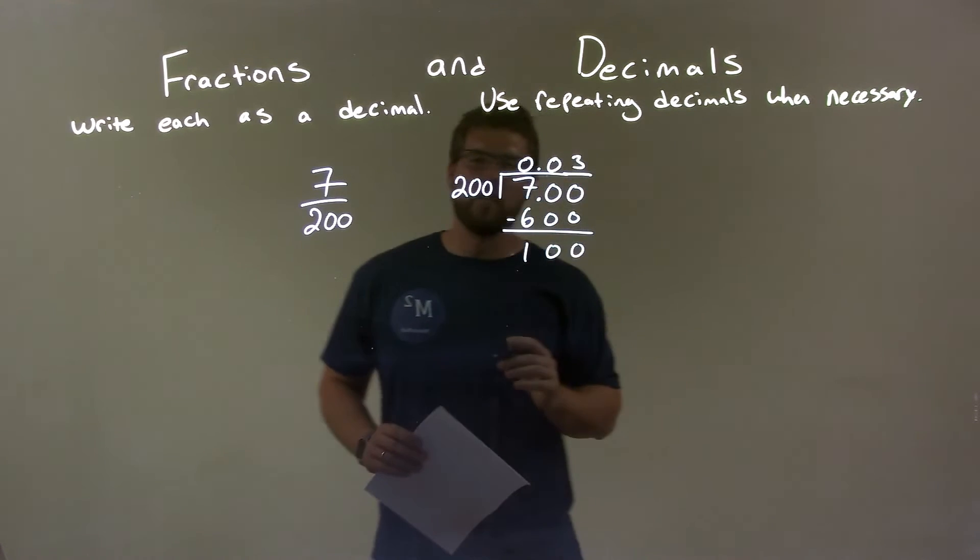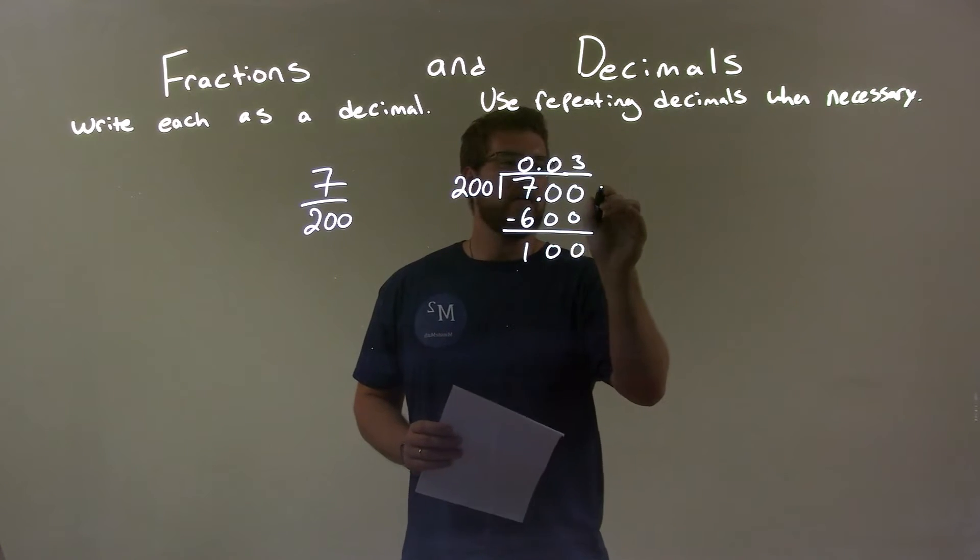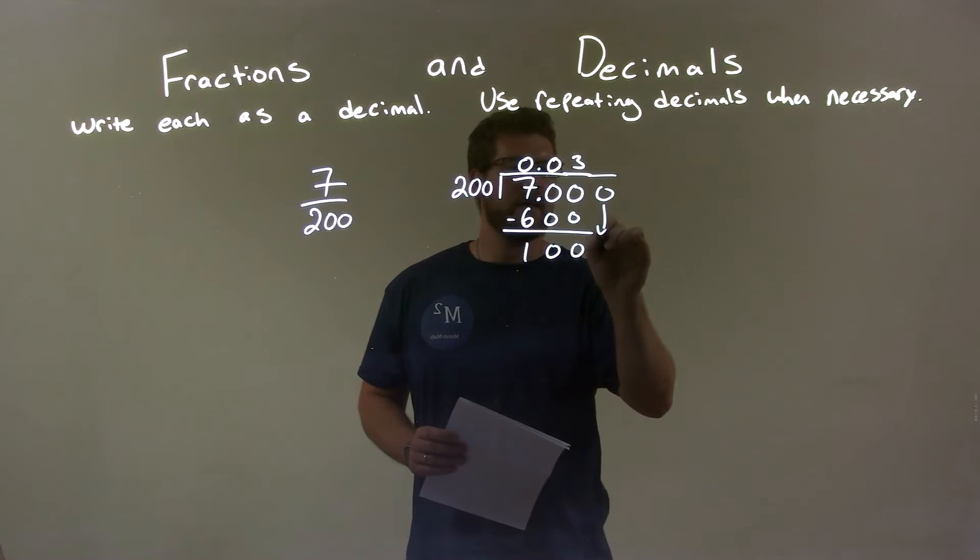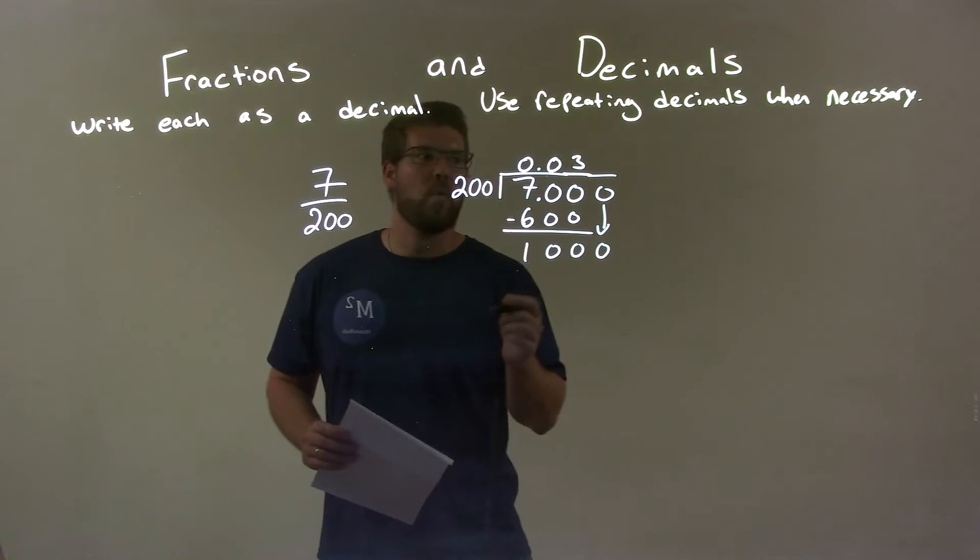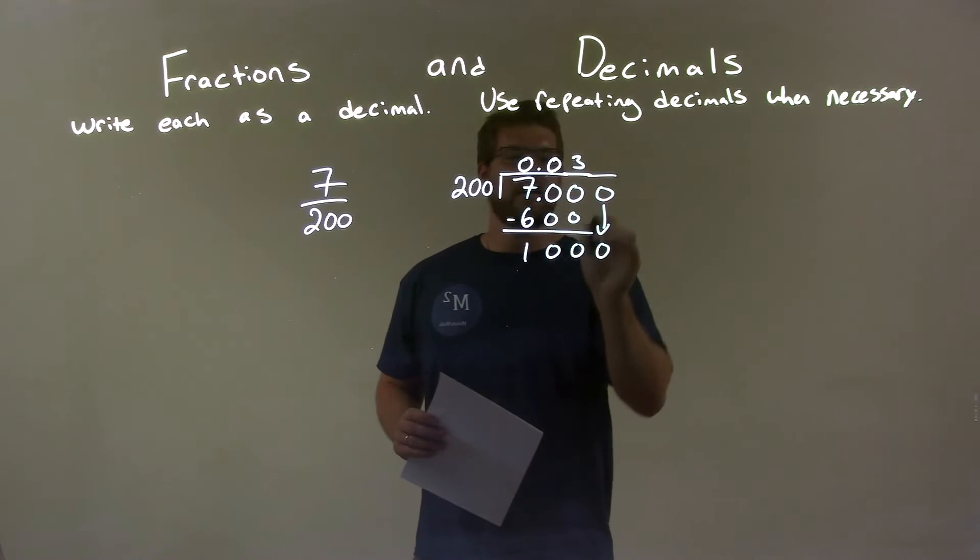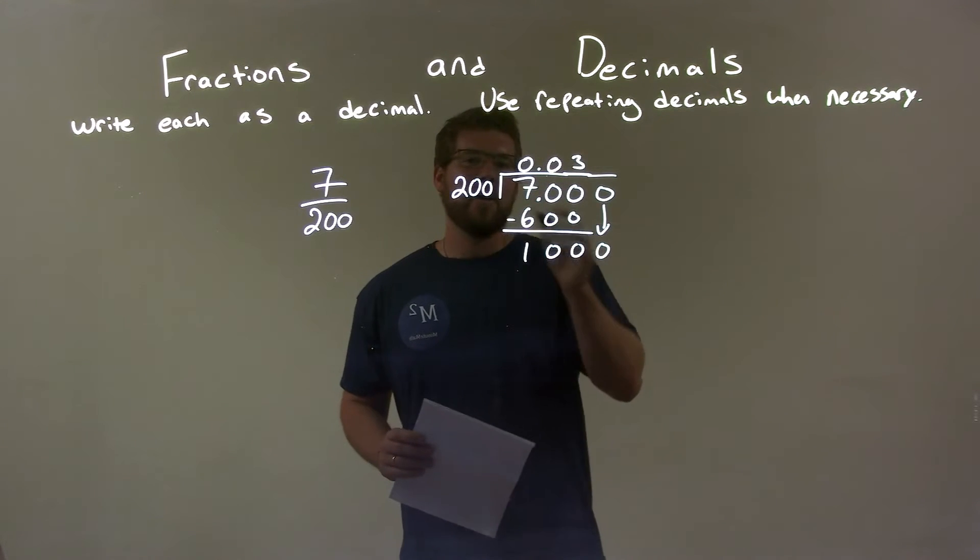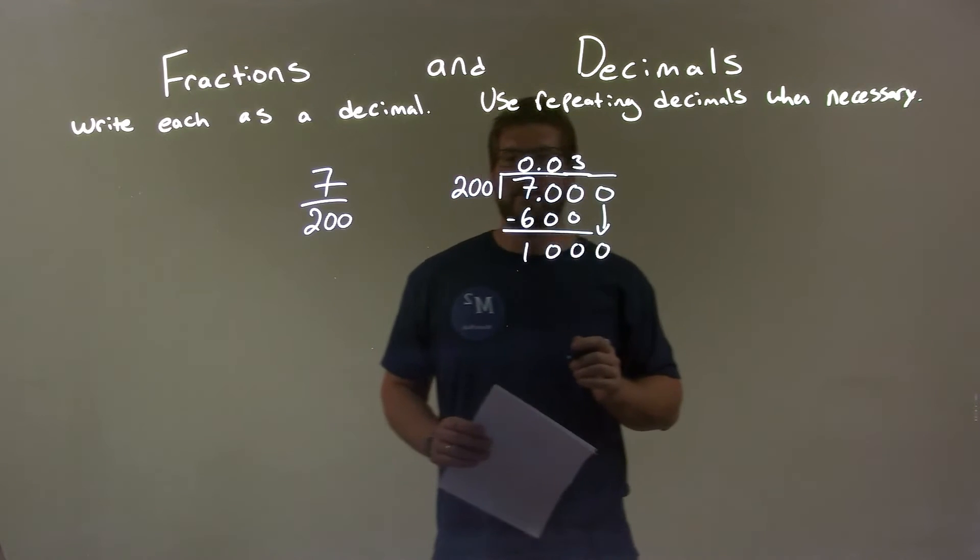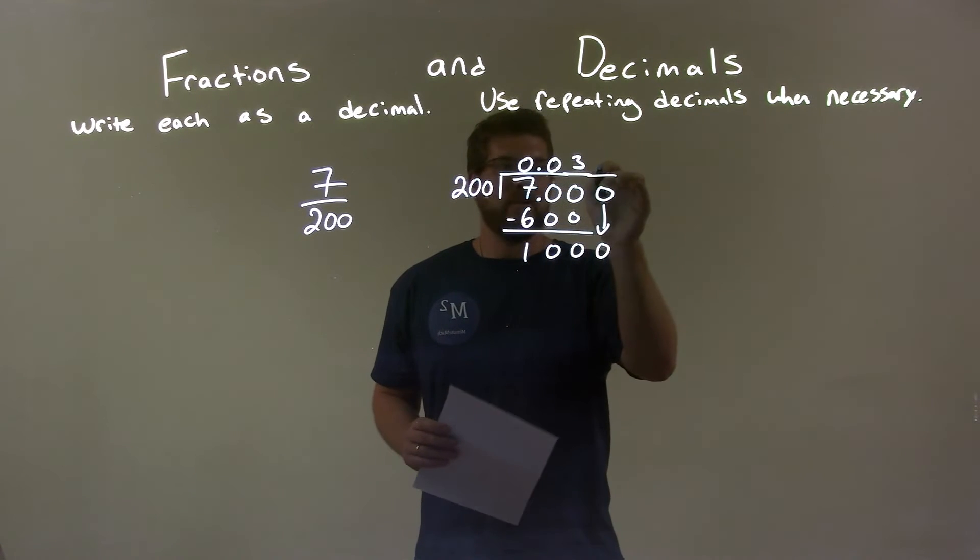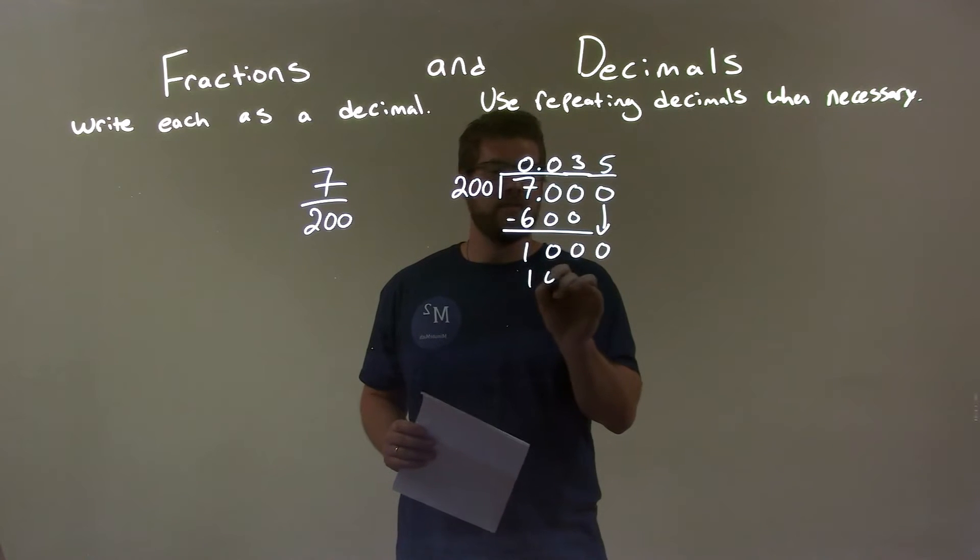Now, can 200 go into 100? No. So we add another place value and bring that down. So now we have 1,000. What times 200 give me 1,000? Well, that is 5. 5 times 200 is 1,000.